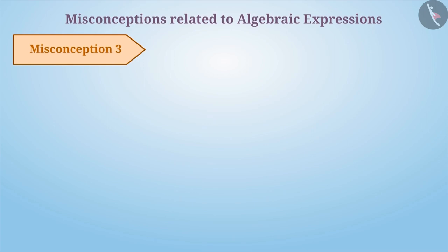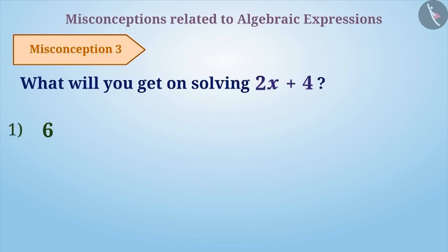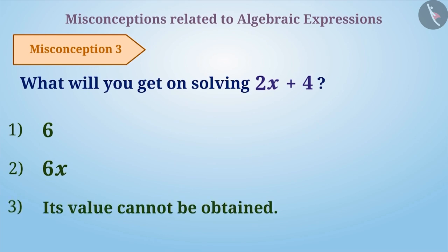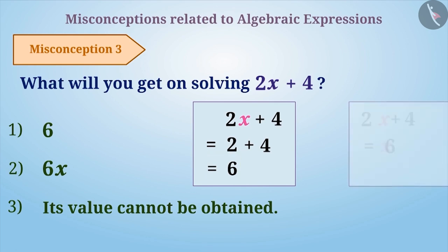Misconception 3. What will you get on solving 2x plus 4? Because of lack of understanding of variables, the letter used for them is often ignored, with which the result of the given expression is written as 6 or 6x. These are wrong answers.